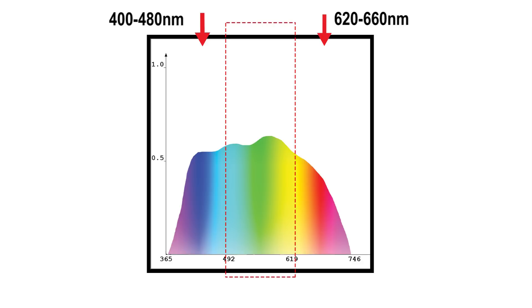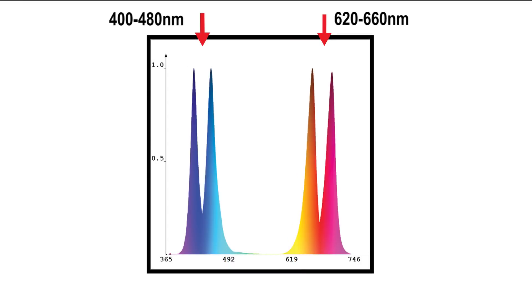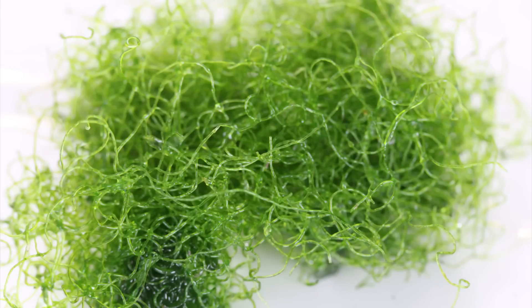By eliminating the unusable wavelengths and concentrating on the PER spectrum, we can target different parts of the plant's cellular growth structure, which means faster growth, higher plant quality, and no wasted energy.